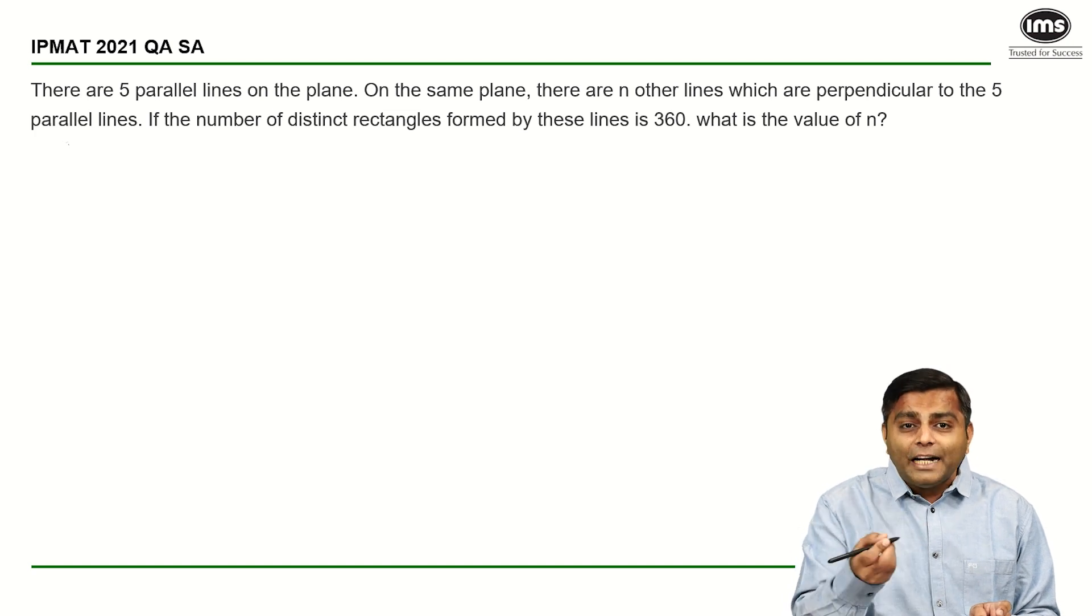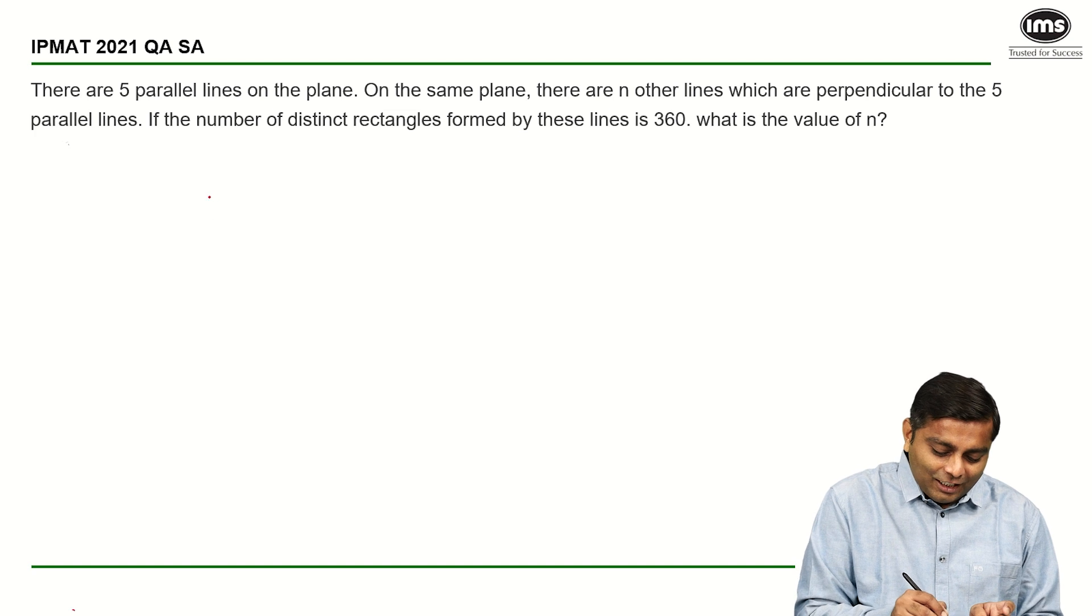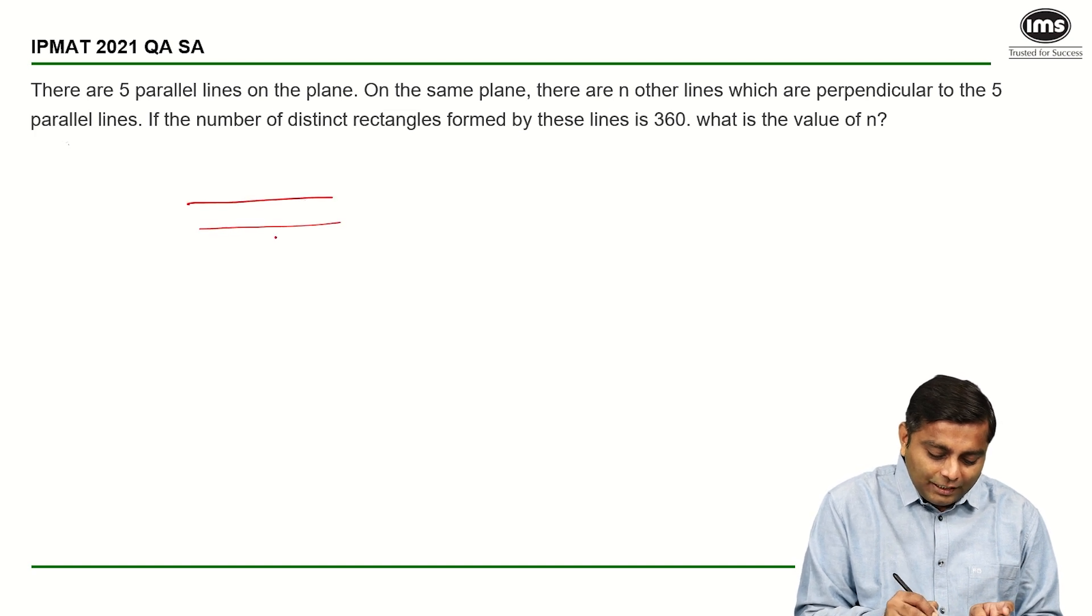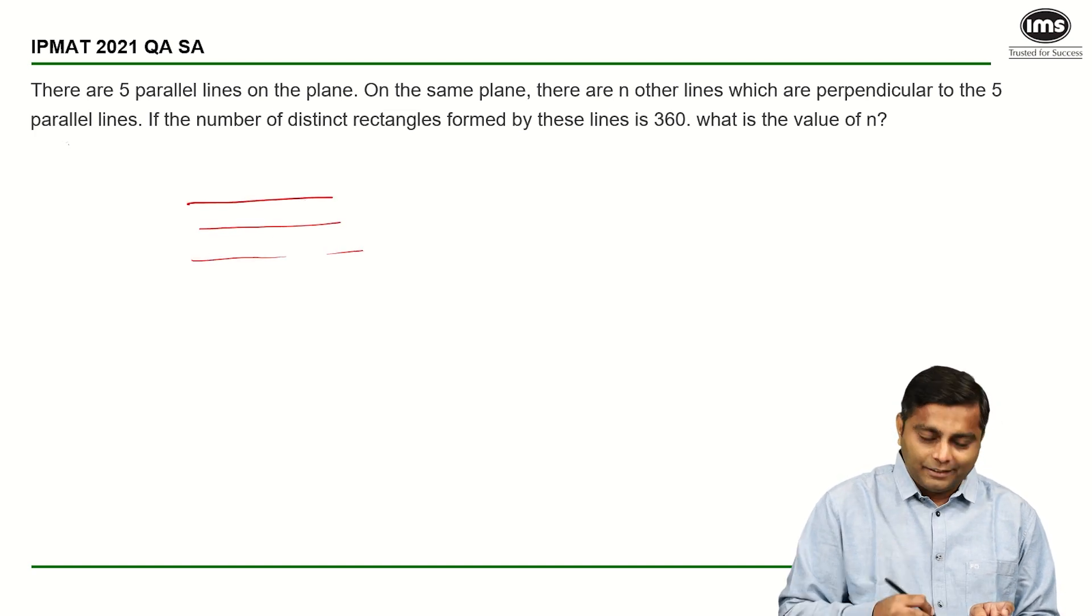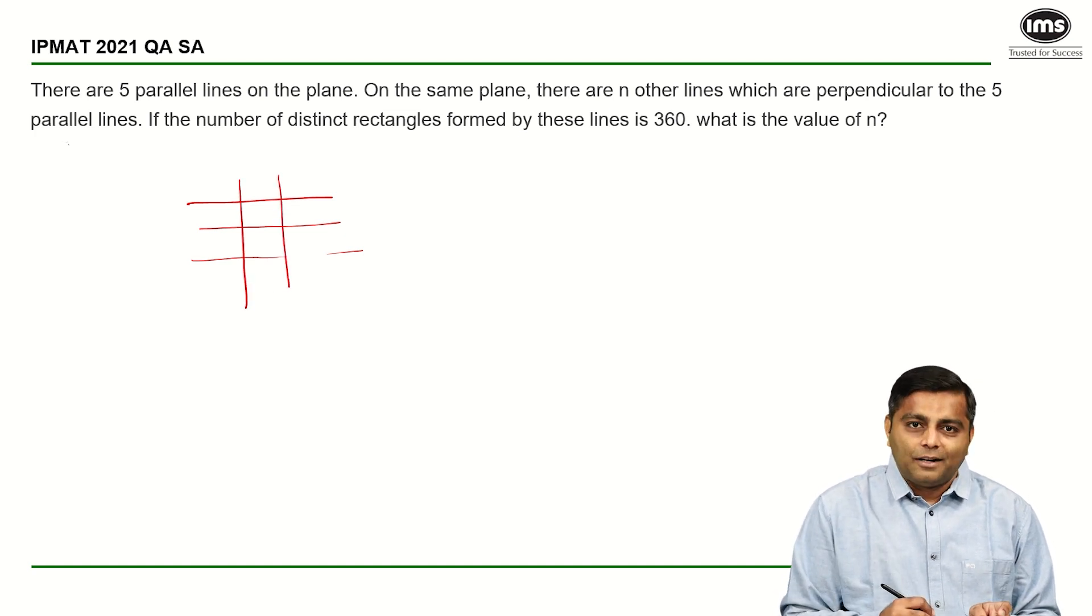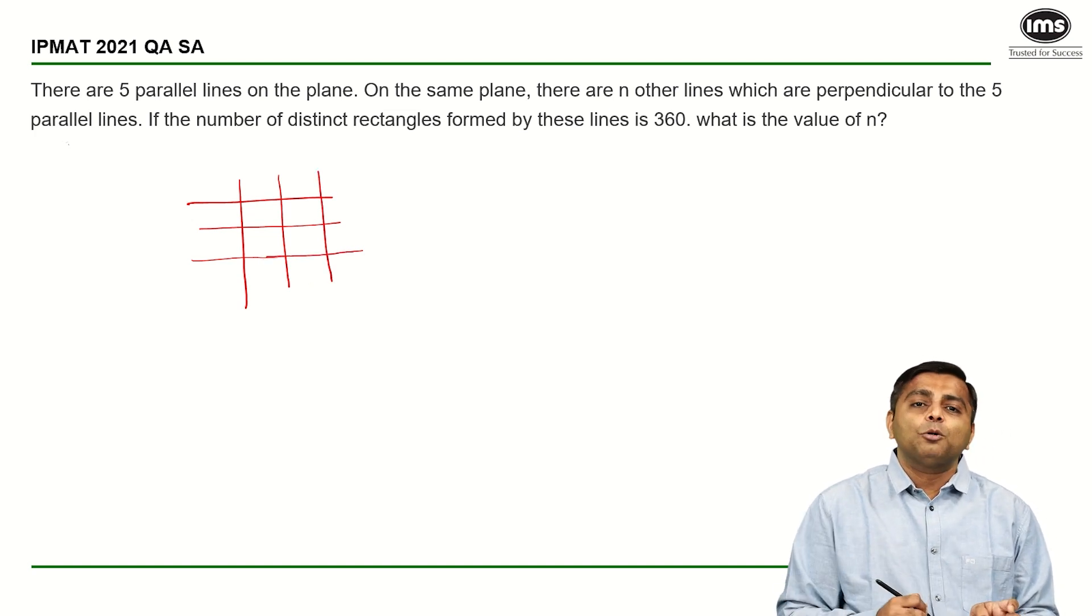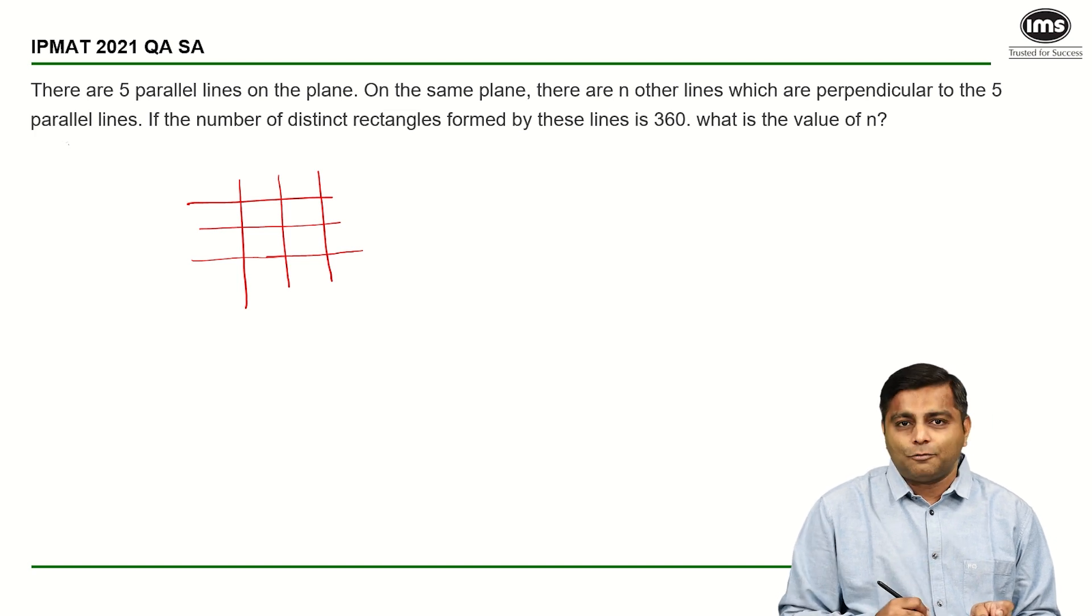If you do not already know the concept, I will just quickly take you through it. Assume that there are three horizontal parallel lines and let's say there are two vertical parallel lines. Or rather let us just make this as three also and we are trying to count the number of rectangles formed.